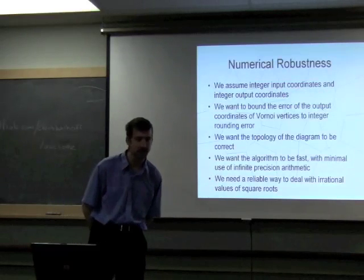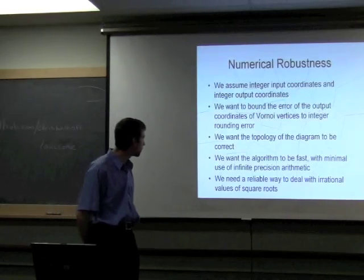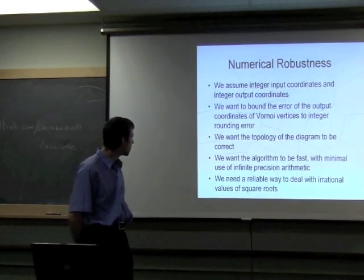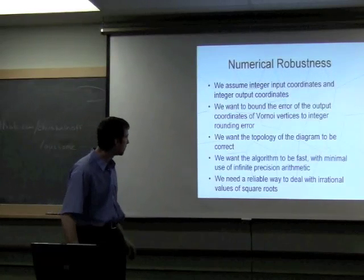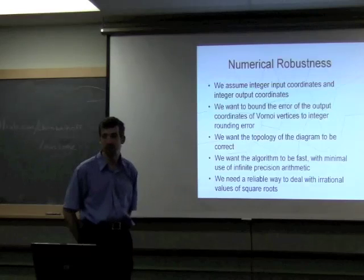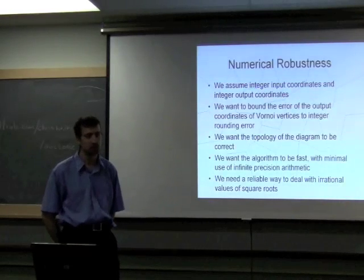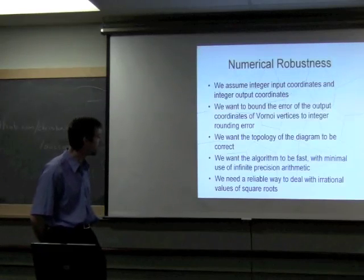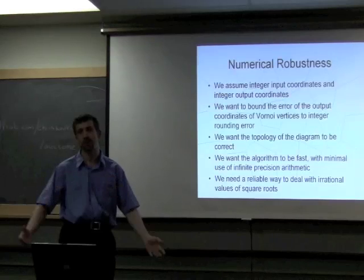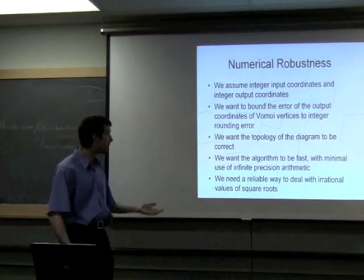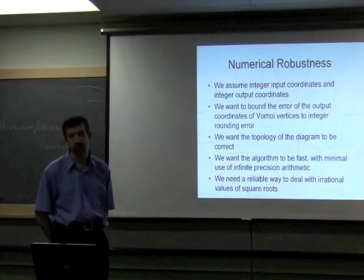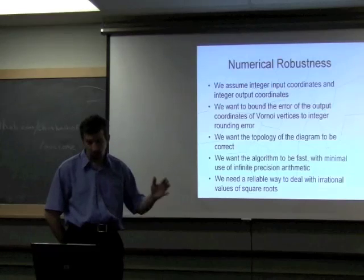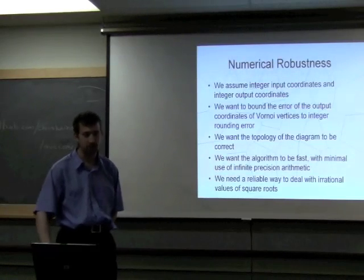Because there's square roots in the computation of the circle event, the Voronoi vertices can't be represented exactly. We want to bound the error on those below integer rounding errors, since that's what we're snapping to anyway. But we need to do better than that to get the topology correct, because ideally we want the exact topology. We also want the algorithm to be fast with minimal use of infinite precision arithmetic. Just using infinite precision everywhere is a cop-out. In our case, it's not even possible because an infinite square root is infinitely large and not useful.